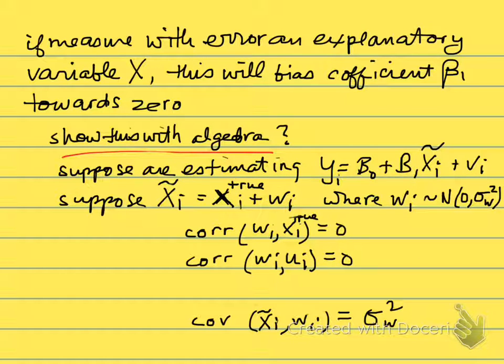Let's suppose then that we're estimating this equation: Y equals β₀ plus β₁X. I've put the tilde over the X to indicate that this is going to be the mismeasured X. So we've measured X with error, and we have some error term v. The mismeasured X is given by this equation: X̃ᵢ equals Xᵢ plus wᵢ.